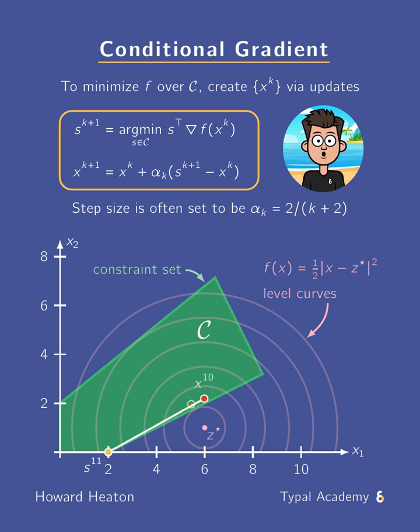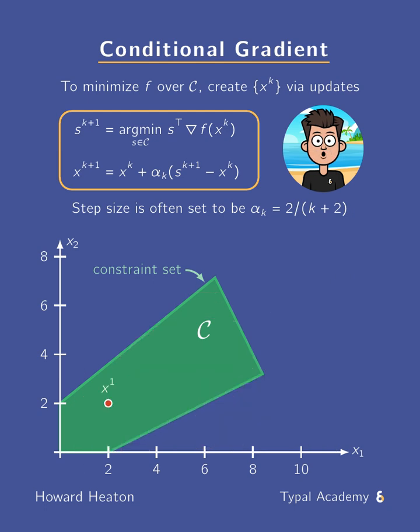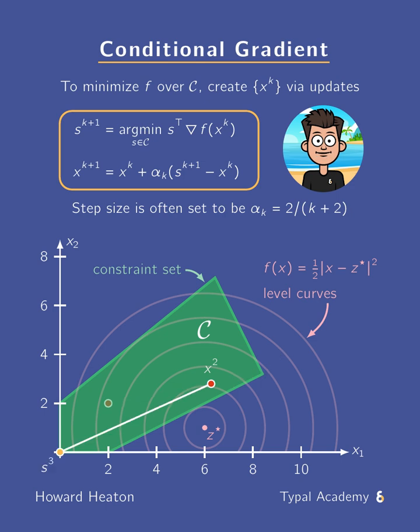It generates a sequence of solution estimates using two steps. The first step is to find the minimizer s^(k+1) of a linear function over the constraint set. The linear function is the dot product with the gradient evaluated at the current solution estimate x^k.